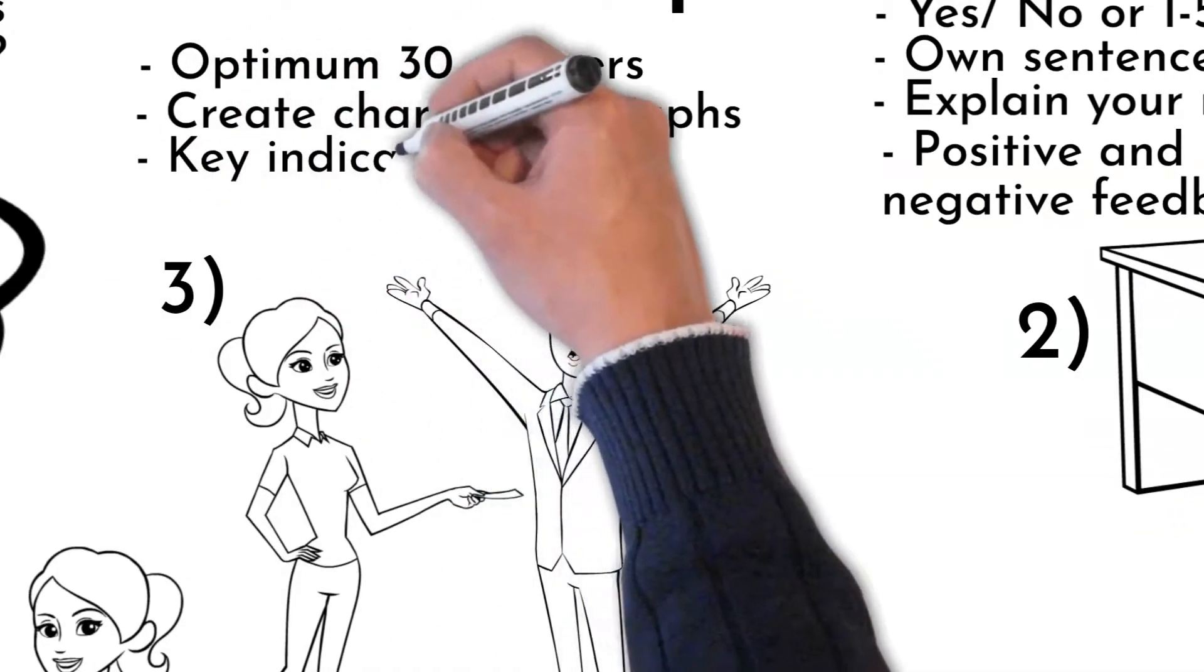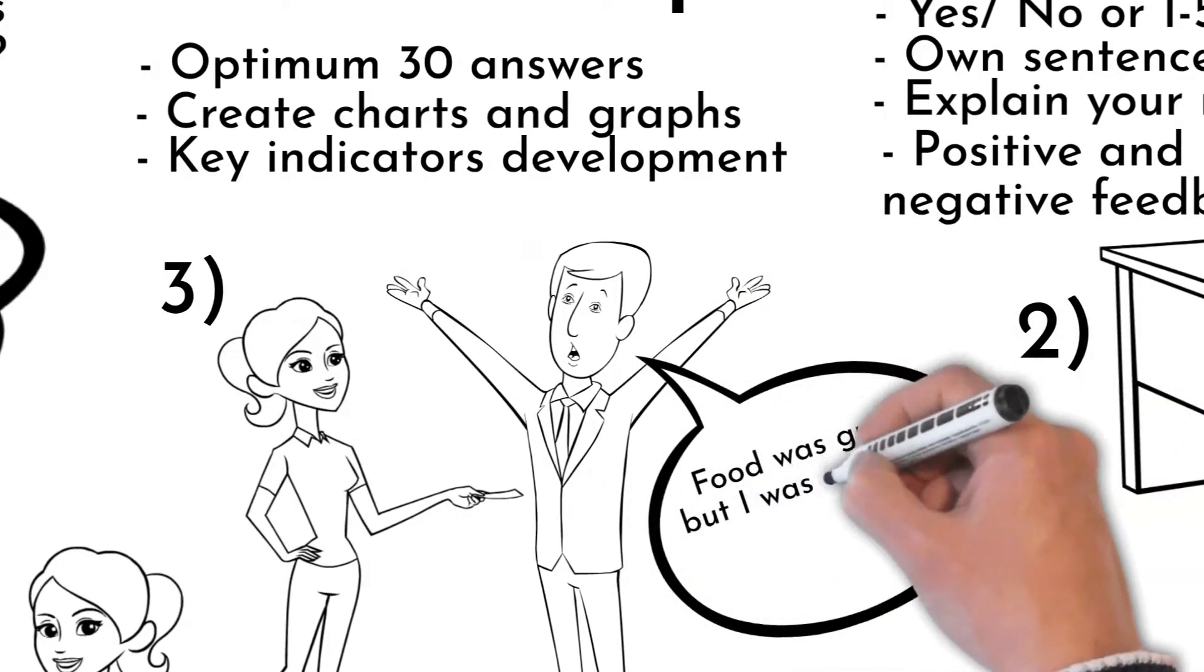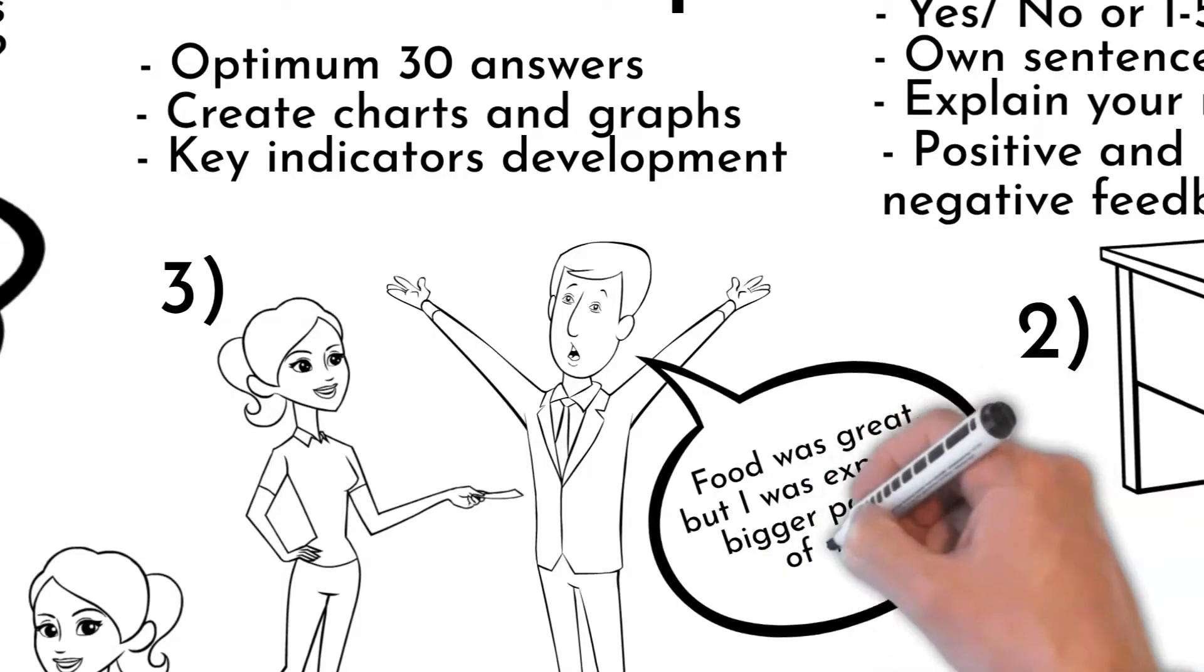VOC example at restaurant: 'Food was great but I was expected bigger portion of meat.' Key indicator could be portion size.